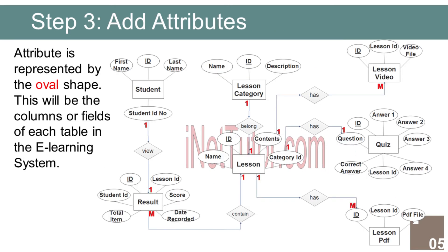The last part of the ERD process is to add attributes to our entities. Student entity has the following attributes: ID (Primary Key, represented with underline), Student ID (Foreign Key), Lesson ID (Foreign Key), Score, Total Item, Date Recorded.